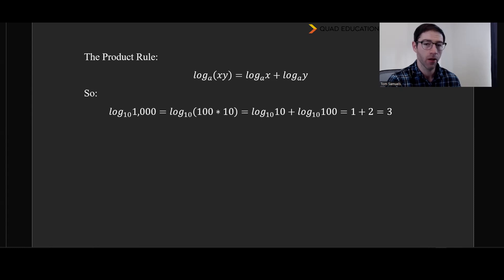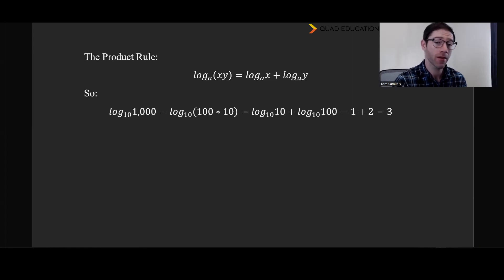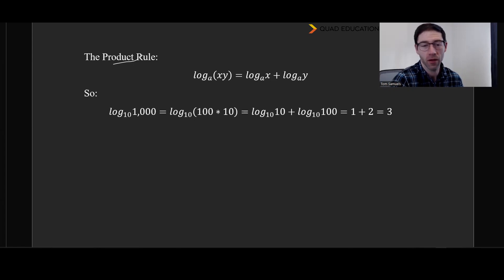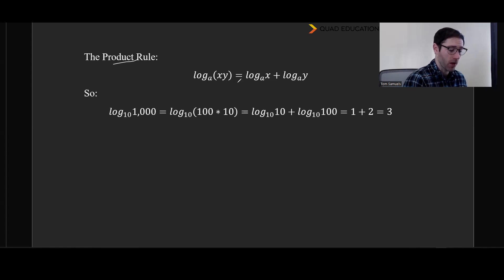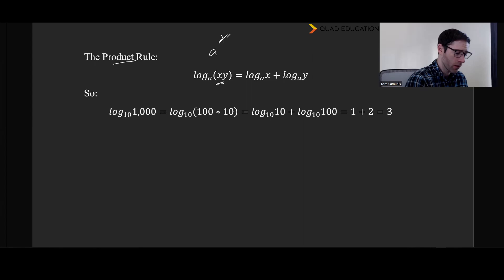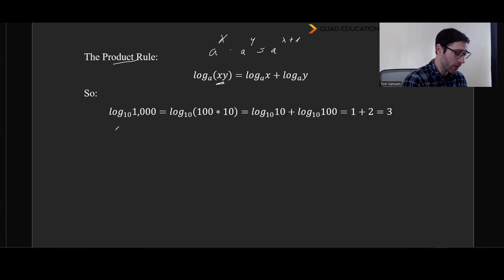Now we need to look at a couple of rules associated with logarithms. It's not just enough to understand that you're finding an exponent — there are rules you need to have at the ready, because just like exponent questions, logarithm questions can be tricky puzzles. The first property is the product rule: log base a of (x times y) equals log base a of x plus log base a of y. When you realize we're hunting for exponents, and that a power times a power means adding, this actually makes a ton of sense.